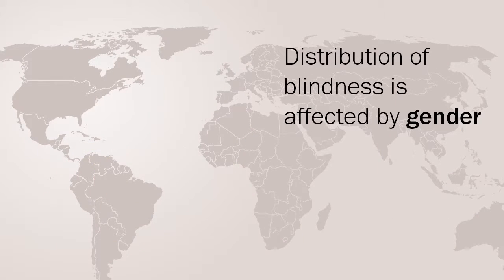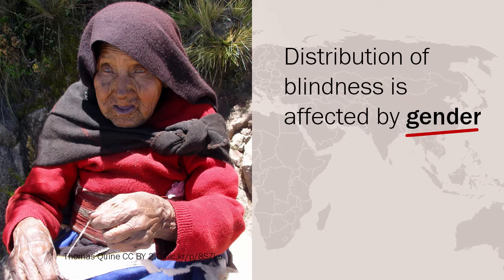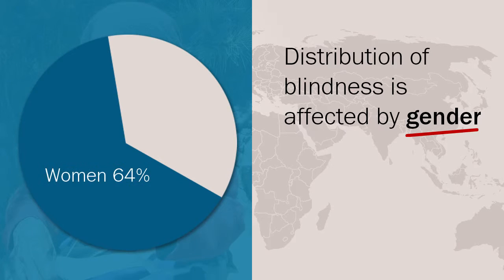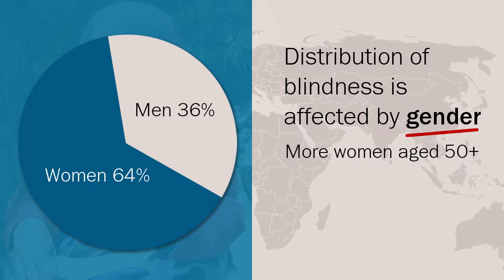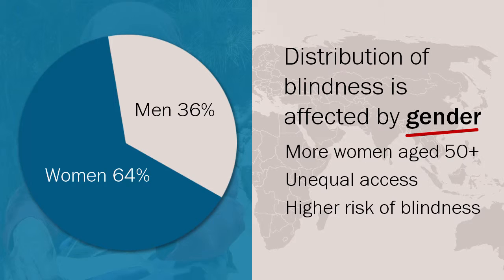Distribution of blindness is also affected by gender. Most surveys around the world have found more blind women than men. A study in 2001 estimated the gender distribution of global blindness as 64% women and 36% men. The main reasons for this are: there are more women than men over the age of 50 in most populations; women often do not have equal access to eye care services; and women are at a higher risk of blindness from certain conditions, for example trachoma.